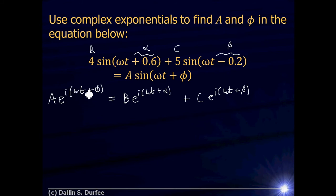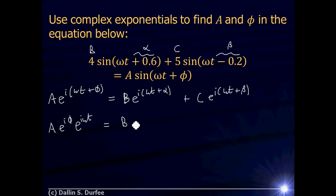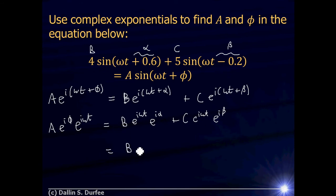Working with our complex exponential equation, on the left-hand side I can split the sum into a product: A times e to the i*phi times e to the i*omega*t. On the right-hand side, similarly, B times e to the i*omega*t times e to the i*alpha plus C times e to the i*omega*t times e to the i*beta. I can then factor out the e to the i*omega*t, leaving B times e to the i*alpha plus C times e to the i*beta, all times e to the i*omega*t.